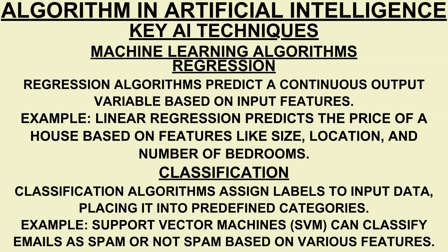Key artificial intelligence techniques — machine learning algorithms. Regression: regression algorithms predict a continuous output variable based on input features. For example, linear regression predicts the price of a house based on features like size, location, and number of bedrooms. Classification: classification algorithms assign labels to input data, placing it into predefined categories. For example, support vector machines (SVM) can classify emails as spam or not spam based on various features.